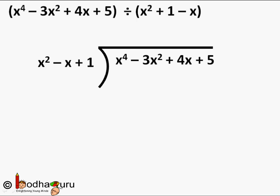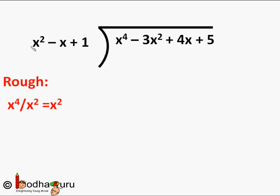Say x⁴ minus 3x² plus 4x plus 5 divided by x² minus x plus 1. Now we start the division process as usual by dividing the highest degree term of the dividend by the highest degree term of the divisor — that is x⁴ divided by x² — we will get x².